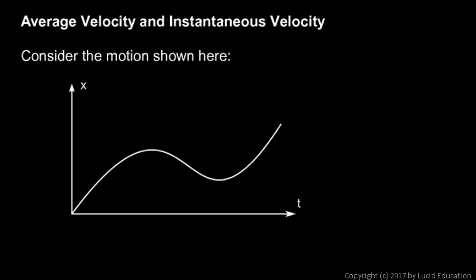We're going to look at the graph of an object's position over time and talk about average velocity and instantaneous velocity. The average velocity will be a measure of how much distance the object covers over a time interval, and the instantaneous velocity will be a measure of how fast the object is moving at a particular moment in time. Let's look at the average velocity first.